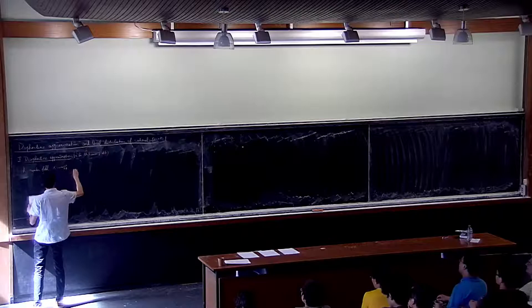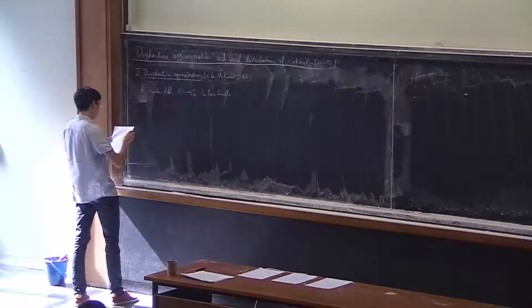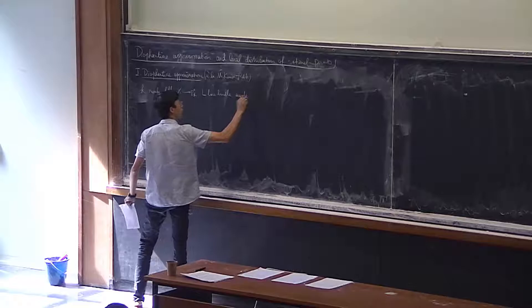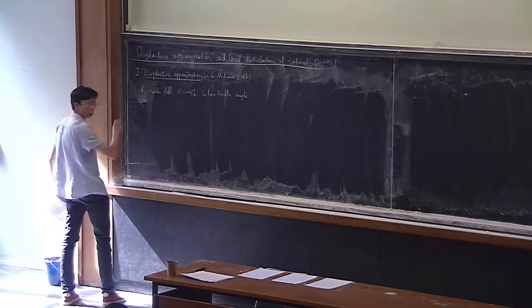Let me fix K, a number field, and let X be a projective variety over K, and L a line bundle, which is supposed to be ample. We associate an exponential global height to L.